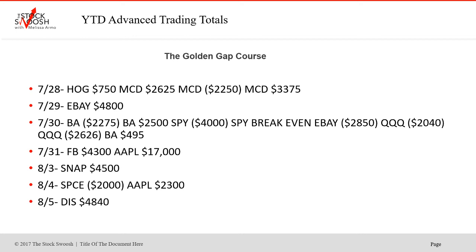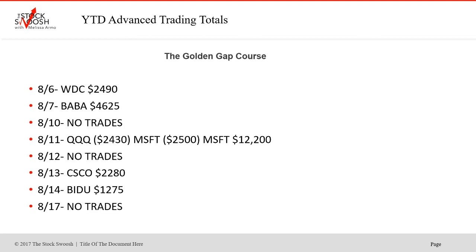Then on July 31st, Facebook won, Apple — big winner, big one. August 3rd, Snap won. August 4th, SPCE lost, Apple won, and then Disney was a good one on the 5th. August 6th, WBC won. August 7th, BABA won — we haven't done that in a while. August 10th, no trades. August 11th, Qs lost, Microsoft lost, big winner in Microsoft then — that tanked today actually too.